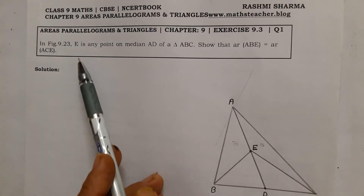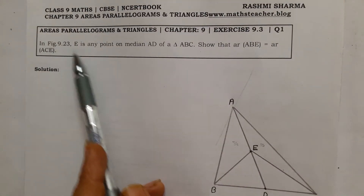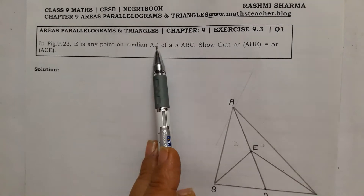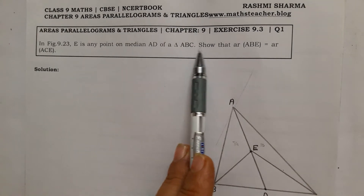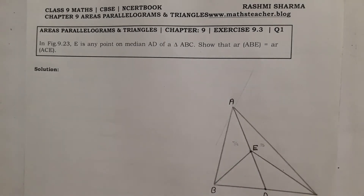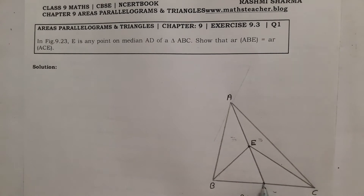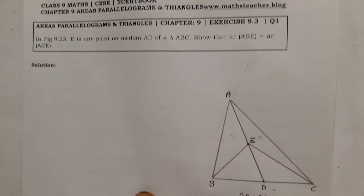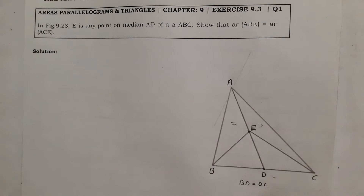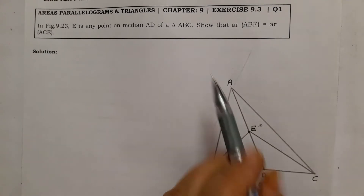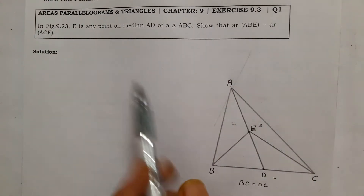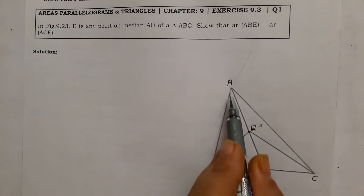Here is your question: if in the figure, E is any point on median AD of triangle ABC. AD is a median, meaning D is a point on BC such that BD is equal to DC. We have to show that area of triangle ABE is equal to area of triangle ACE.